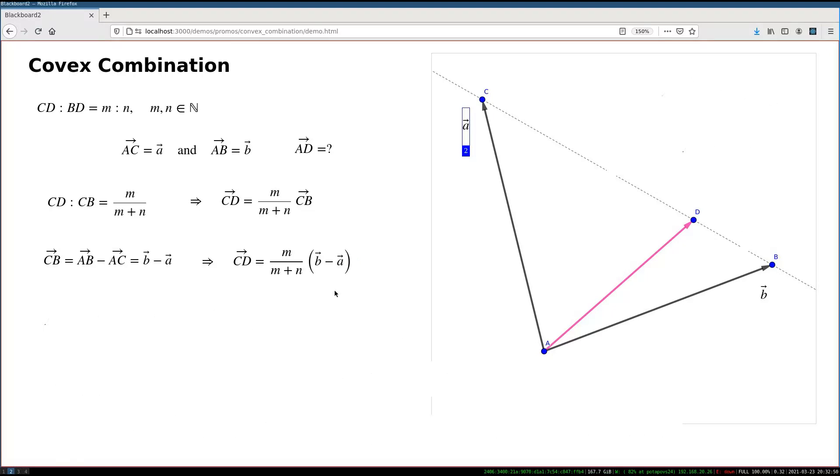again, using the vector algebra, I can finally present the formula for the vector AD, the one we're looking for, the one which will help us to identify the point D. AD is the AC plus CD. That's a triangle rule.